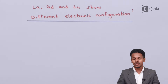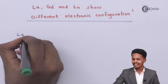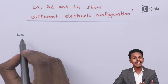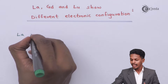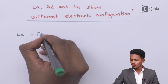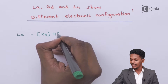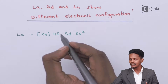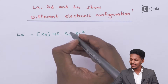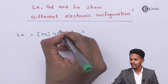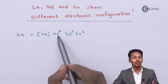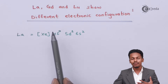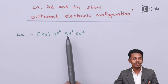Talking about lanthanum first — lanthanum is placed in the 6th period and the 3rd group, and the atomic number of lanthanum is 57. Based on that we can write the electronic configuration as [Xe] 4f⁰ 5d¹ 6s². The last electron enters the d orbital — there is only one electron in the 5d orbital and zero electrons in the 4f orbital, so the electron is not entering the 4f orbital; instead it is entering the 5d orbital.